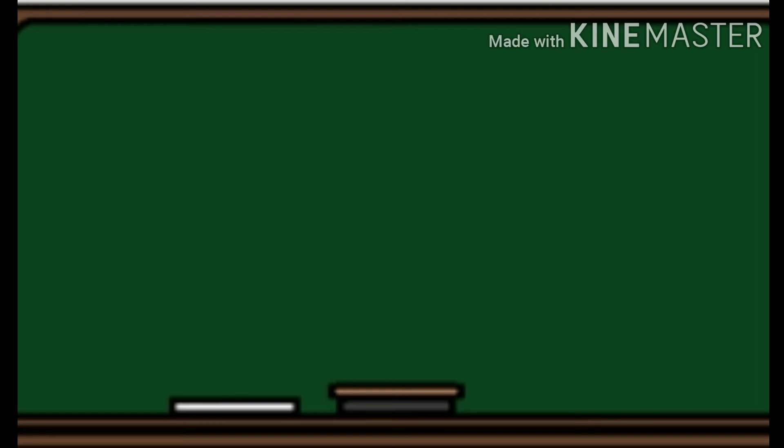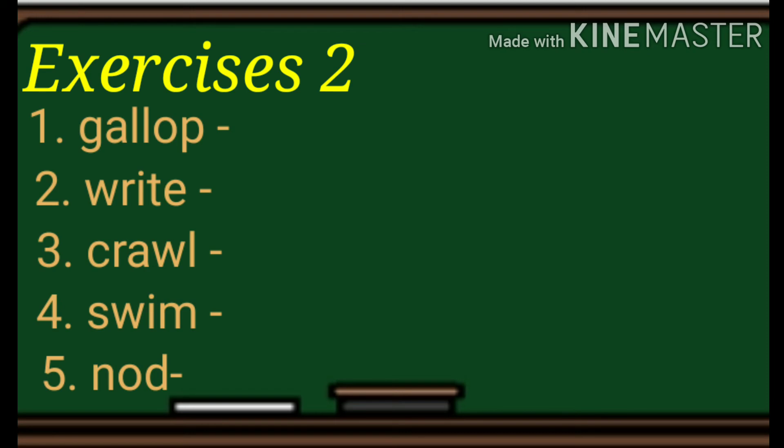Let us now move to exercises number two. Are you ready? Let us begin. Number one: gallop. Number two: right. Number three: crawl. Number four: swing. Number five: nod.